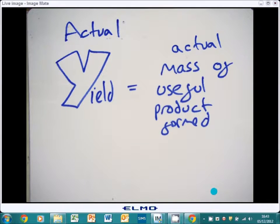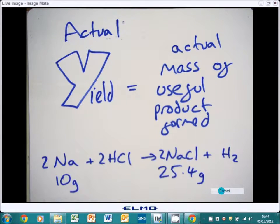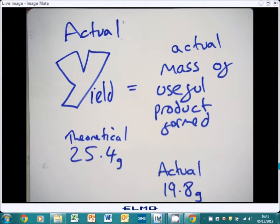The actual yield is what you actually get from doing the practical, doing the experiment, and what you collect at the end. So for example, if we had a reaction here with sodium reacting with hydrochloric acid to form sodium chloride and hydrogen, you can calculate that if you have 10 grams of sodium, you should get 25.4 grams of sodium chloride. However, that's not always the case. If you did the practical, you might only end up with 19.8 grams. What you have to do is work out the percentage yield.